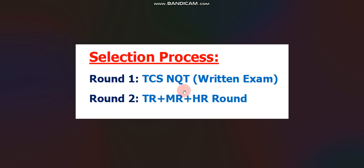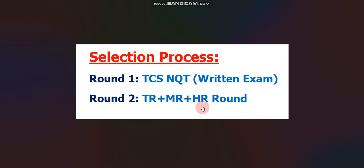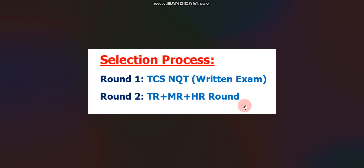Without wasting time, let's get started. First, let's discuss the selection process. There will be a total of two rounds. Round one will be the TCS NQT exam, which is a written exam that can be taken online or offline. If you qualify round one, you will be eligible for round two, which will be a TR plus MR plus HR round — managerial and HR rounds — conducted either on the same day or on different days depending on HR availability.